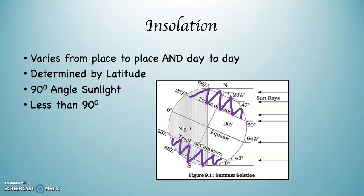Every place outside of that, from 23.5 degrees north to the North Pole and 23.5 degrees south to the South Pole, those places do not receive 90 degree angle sunlight. The sunlight is at less than a 90 degree angle, which means less insolation, less capability to heat the planet.